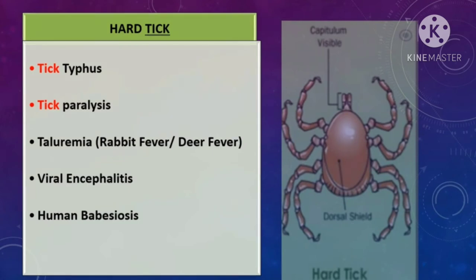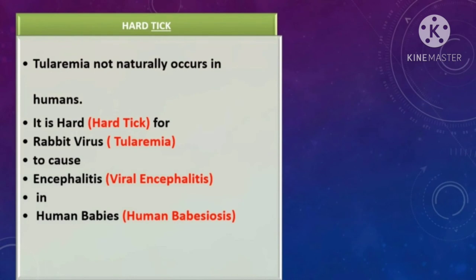The mnemonic for diseases caused by the hard tick is TICK: one tick is typhus fever and another tick is tick paralysis. Tularemia is a rare infection not naturally occurring in humans, also termed rabbit fever or deer fly fever, caused by the bacterium Francisella tularensis. The extended mnemonic is: 'It is hard for rabbit virus to cause encephalitis in human babies.'